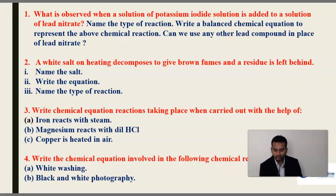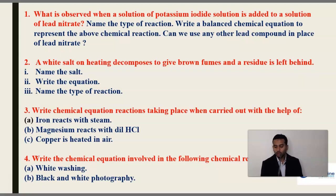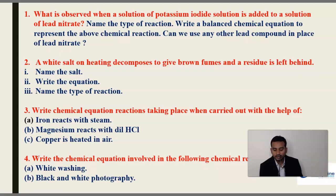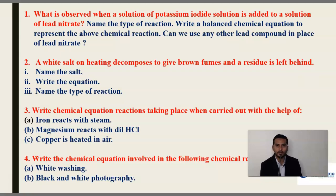Second question: A white salt on heating decomposes to give brown fumes and a residue is left behind. When we heat a white salt, brown color fumes are liberated and some residue is left out. The sub-questions are: Name the salt, write the balanced chemical equation for this reaction, and name the type of reaction that has taken place.